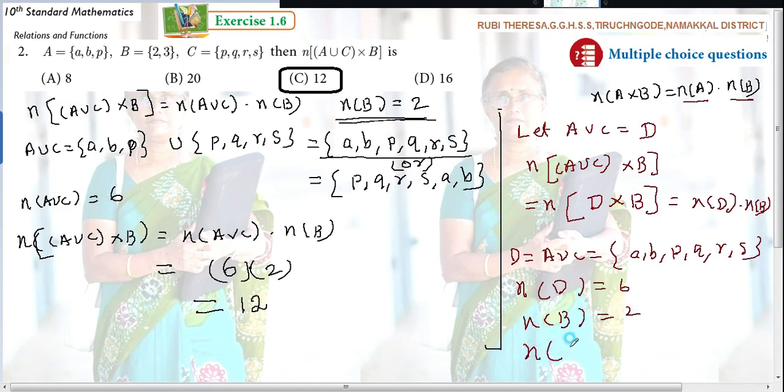N of D cross B equal to N of D into N of B. That is equal to what? 6 times 2 is 12. D is nothing but A union C.